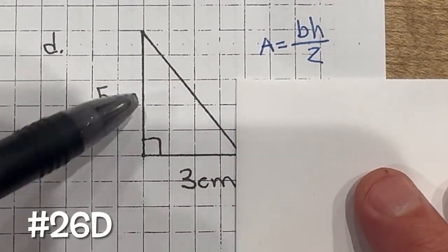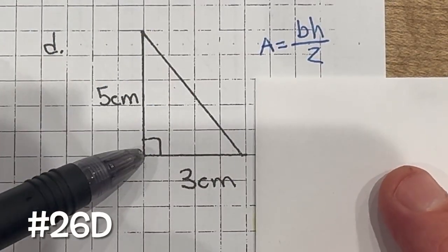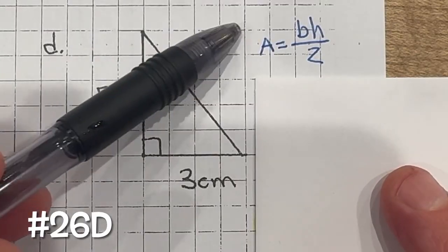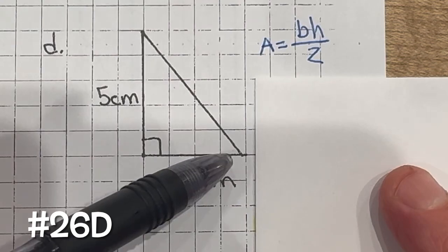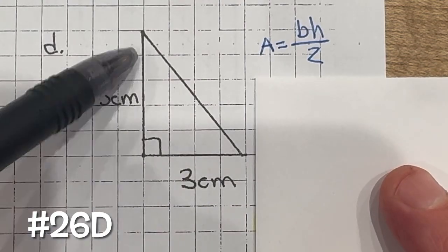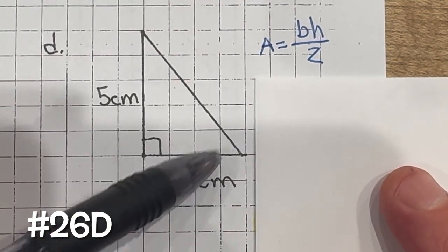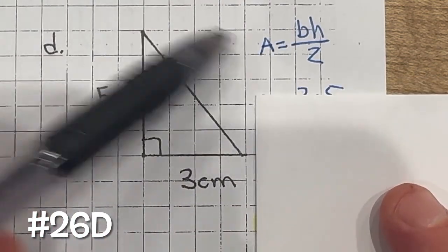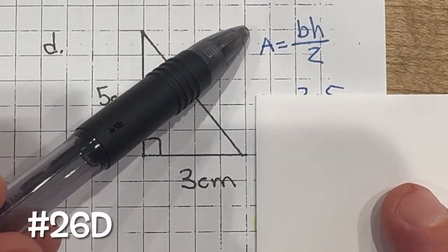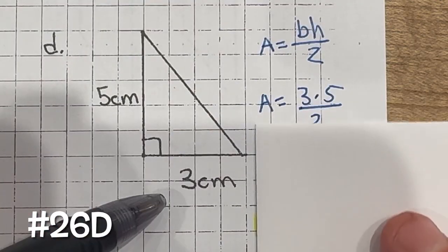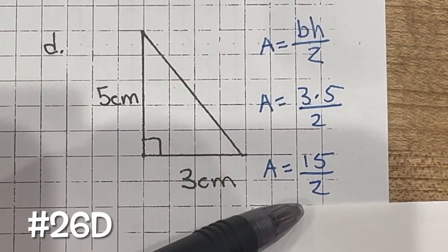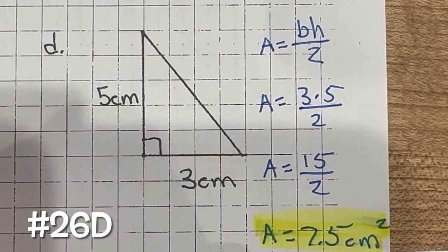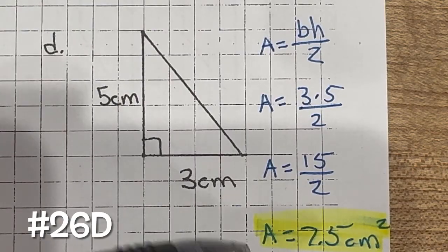Problem 26d: we have the area of a triangle. The area of a triangle is just half of a rectangle — base times height divided by 2. So we have 3 multiplied by 5, which is 15, divided by 2, which gives us an area of 7.5 square centimeters.